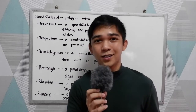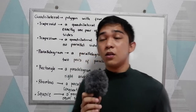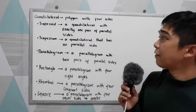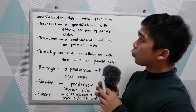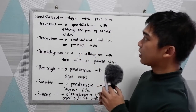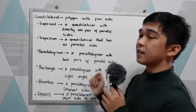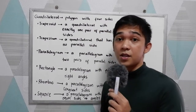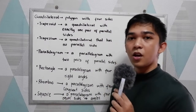Good day everyone. Today I'm going to discuss quadrilaterals. By definition, a quadrilateral is a polygon with four sides, or simply a four-sided polygon.